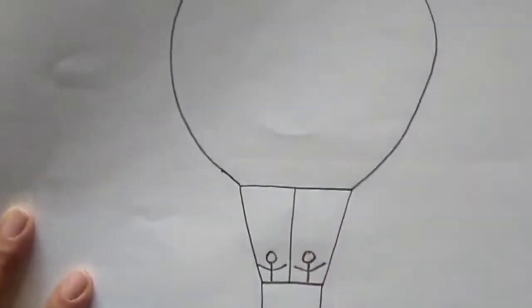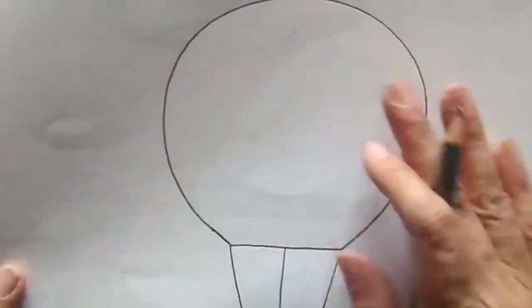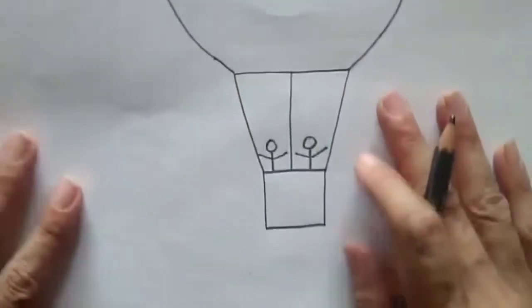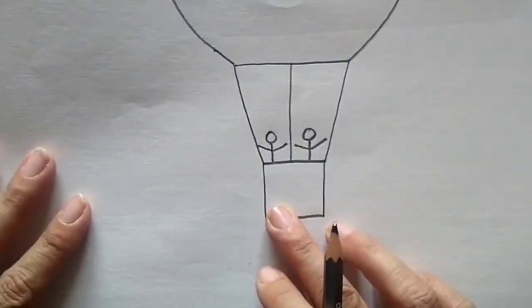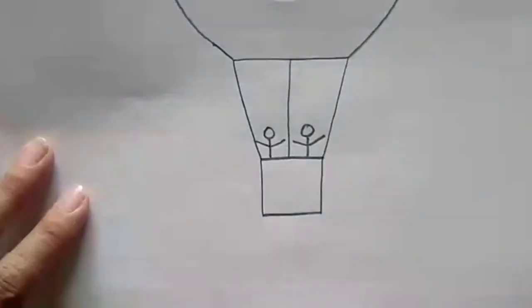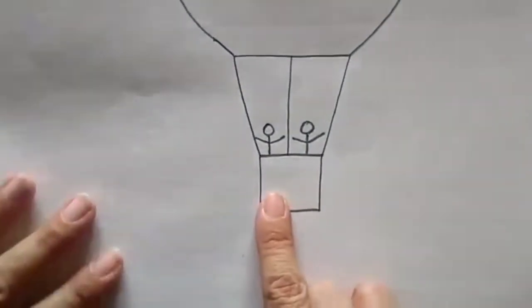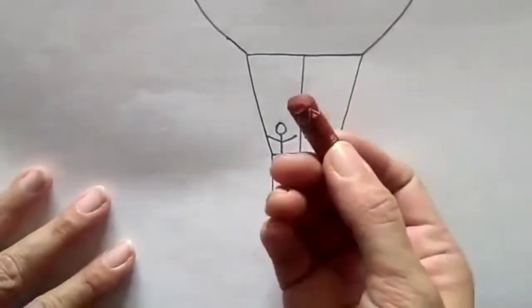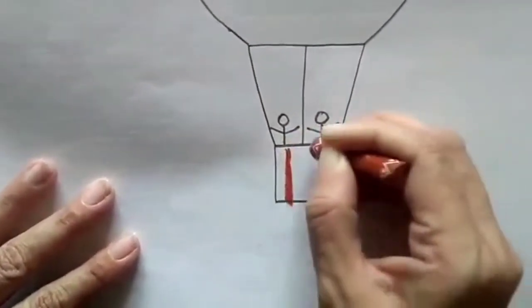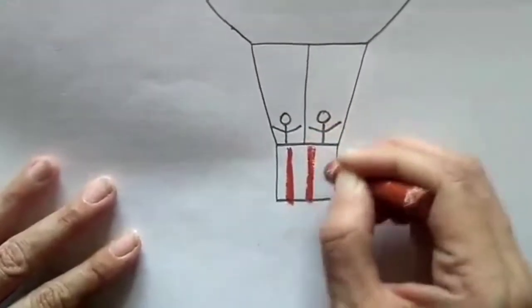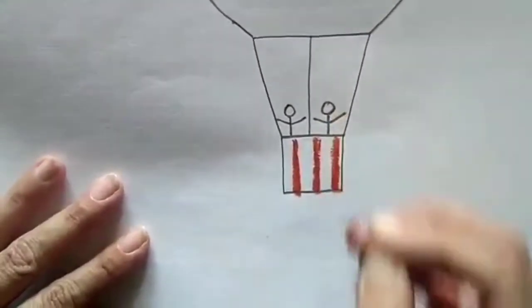Now you need to color this hot air balloon the way you want to. Let me show you how I want to do it. First I will color this box. For that I will be using the brown color. First I will draw standing lines with this brown crayon.